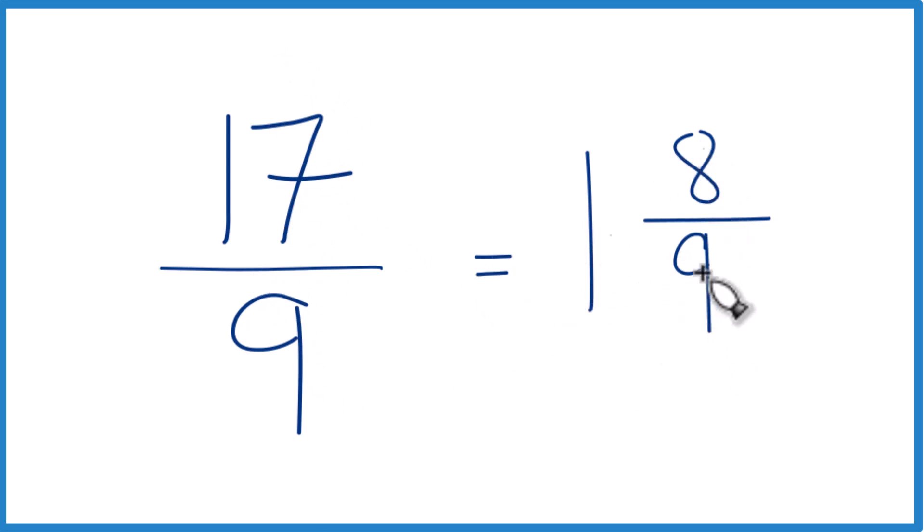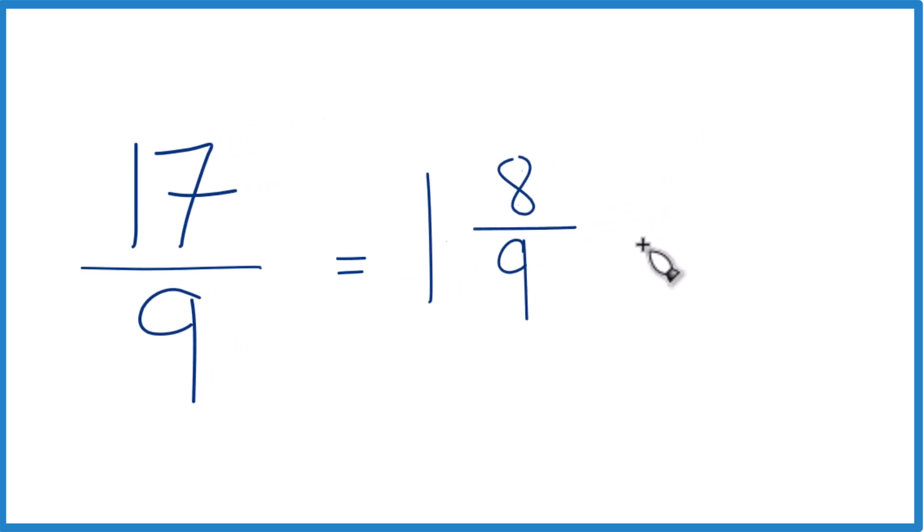Always a good idea to check your work. To do that, you take 9 times 1, that's 9, plus 8, that's 17. Then we keep that 9 across here as the denominator. You see we end up with 17 ninths. That's what we started with, so this is the correct mixed number for 17 ninths.